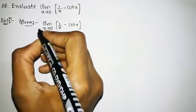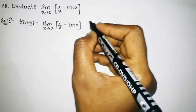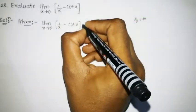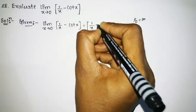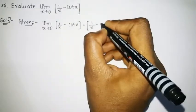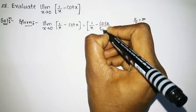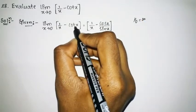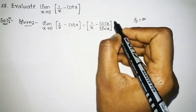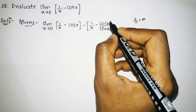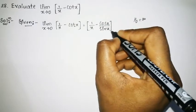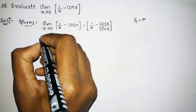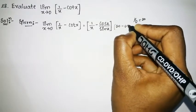First we check the form by substituting the limit as x tends to 0. We know that 1 divided by 0 is infinity. Cot x can be written as cos x divided by sin x. Since cos 0 is 1 and sin 0 is 0, that gives 1/0 which is again infinity. So this is of the infinity minus infinity form.